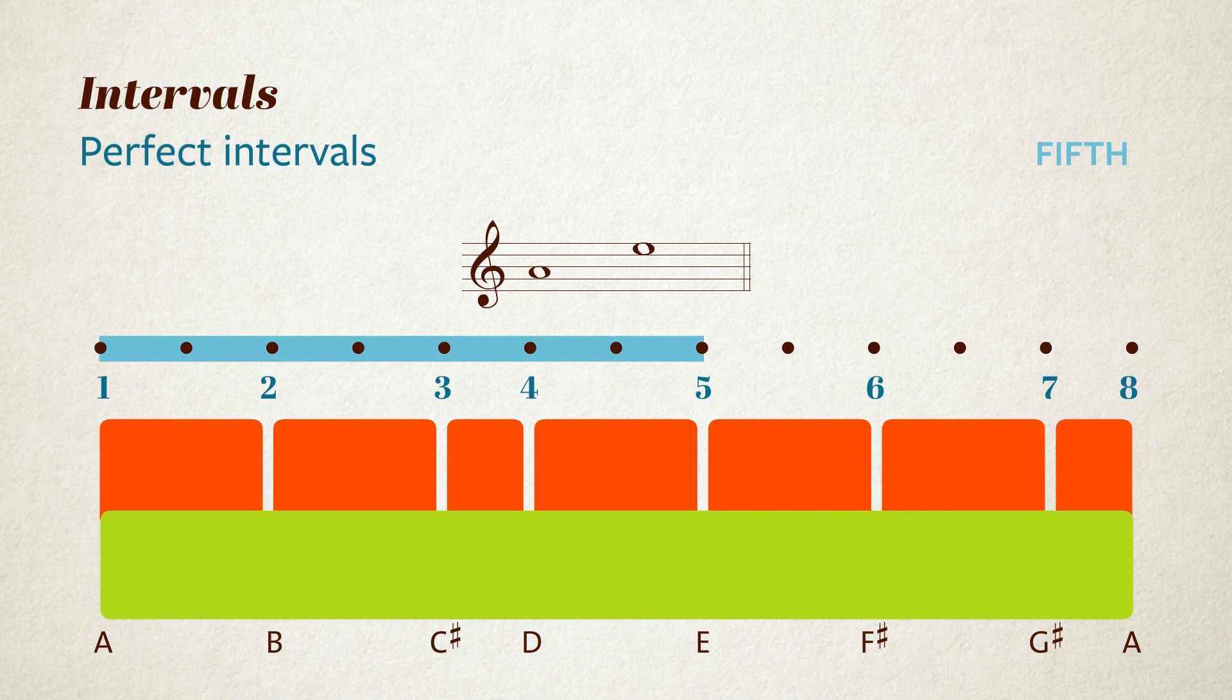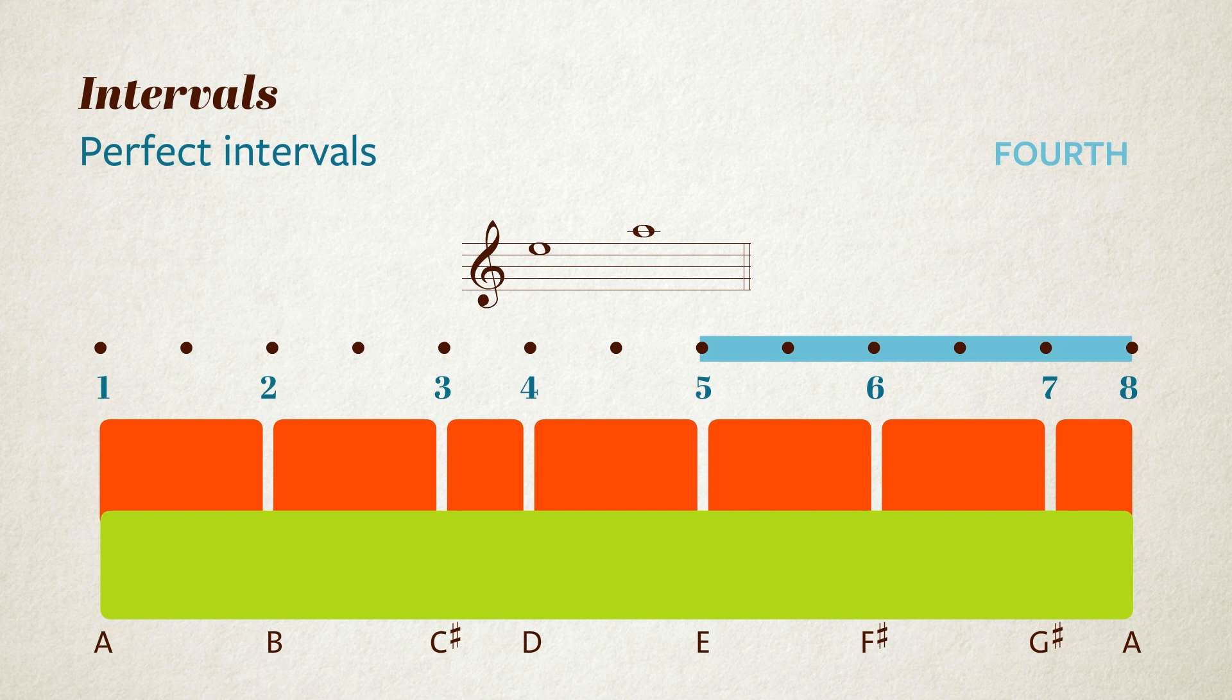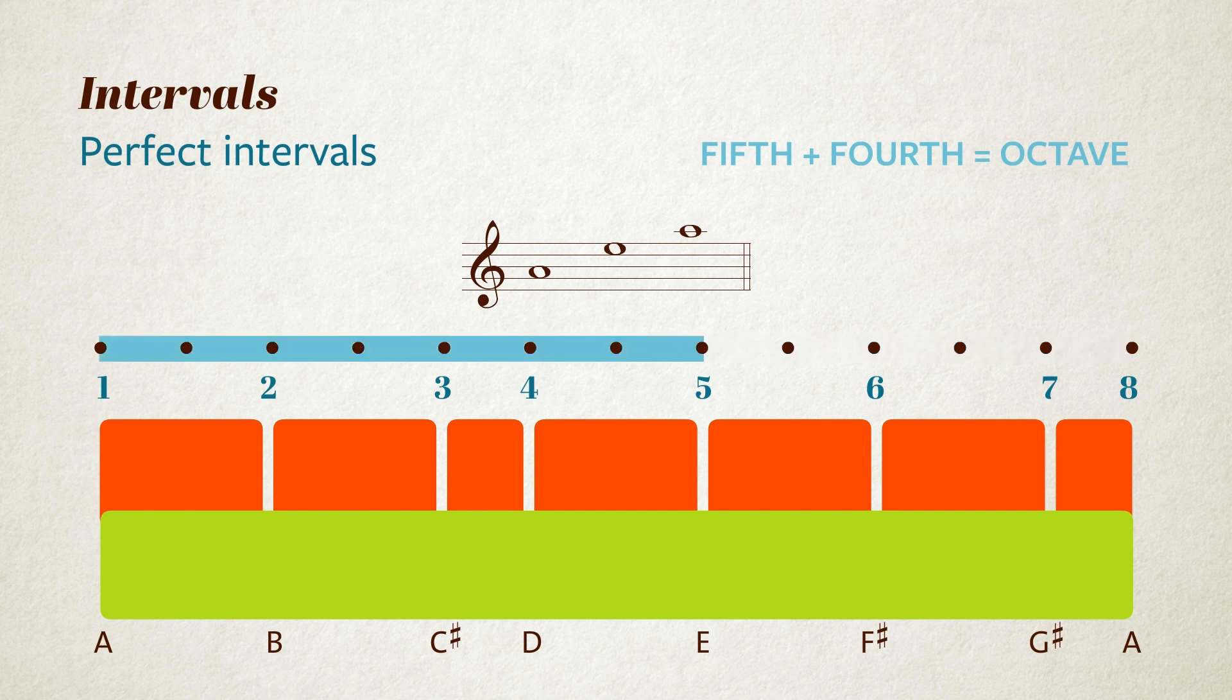You don't have to start from the first note of the scale though. If you start on E and go up to the top A, you'll be playing a fourth. That, by the way, is a handy thing to know that a fifth plus a fourth make an octave. A fifth is seven semitones, and a fourth is five semitones, and together they make twelve semitones, which is an octave.